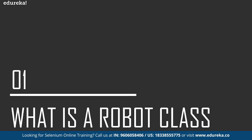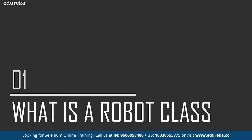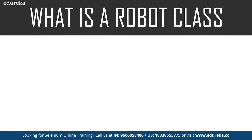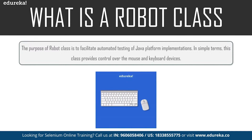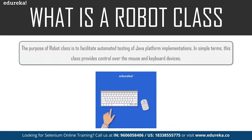Time plays a major role while testing and we need to make sure we complete the desired task within the specific time. A Robot class is used to generate native system input events for the purpose of test automation, self-running demos, and other applications where control of the mouse and keyboard is needed. The primary purpose of this Robot class is to facilitate automation testing for the Java platform. In simple terms, this class provides control over the mouse and keyboard devices, and it can handle pop-ups during execution.